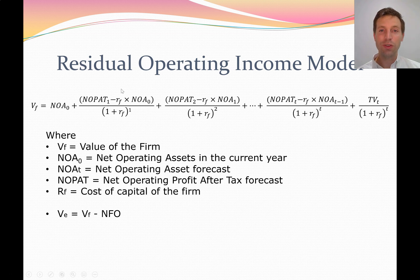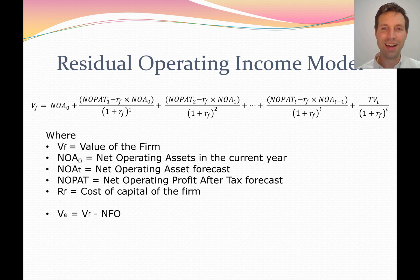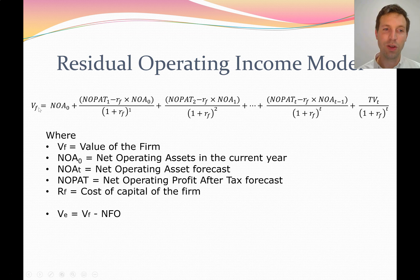The residual operating income model is very similar to the residual income model. However, there are a few key differences. This formula values the firm's assets, uses the cost of capital for the whole firm, and uses operating assets and operating profits to measure business performance. The residual income model, by contrast, uses net profit and values the firm's equity using net profit and owner's equity, whereas the operating income model values the overall firm using operating assets, operating profit, and the firm's cost of capital.